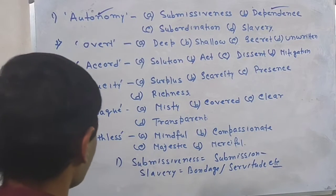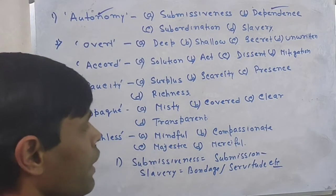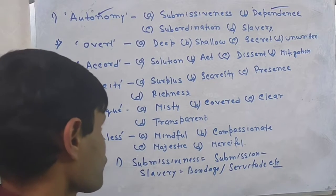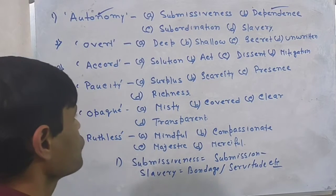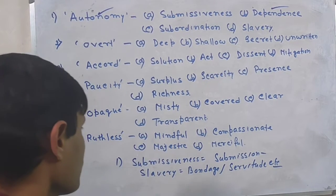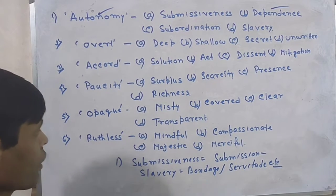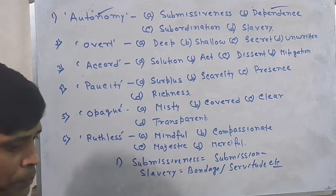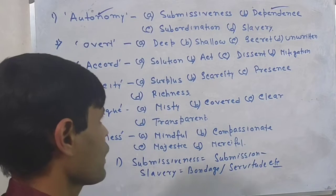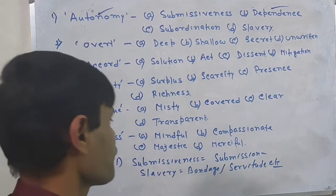The next question is overt. It is the adjective form. There are four options: deep, shallow, secret, unwritten. First option deep, second option shallow, third option secret, fourth option unwritten.